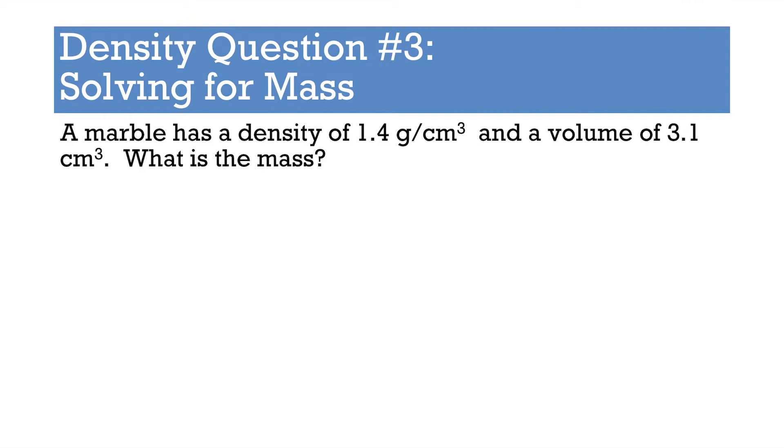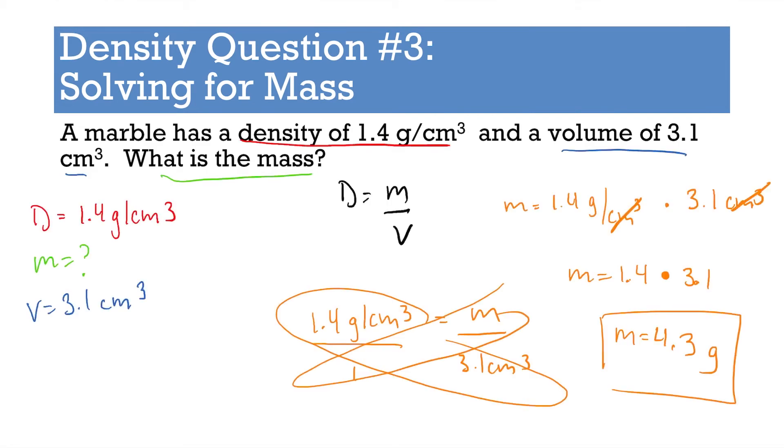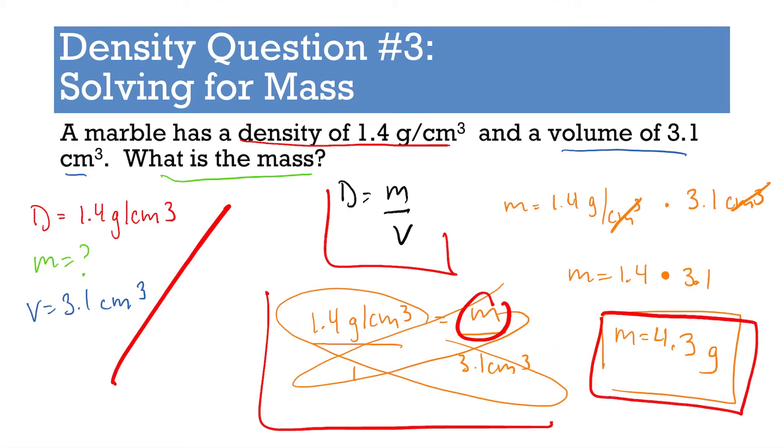If you have no idea what I'm talking about with the triangle, totally ignore it. Okay, number three. A marble has a density of 1.4 g/cm³ and a volume of 3.1 cm³. What is the mass? If we plug in everything, list out our numbers, plug everything into our formula. Again, we're cross multiplying for m, and we get 1.4 times 3.1. The centimeters cubed cancels out and we're left with 4.3 grams. Again, if you do the density triangle, you can see mass and volume. If we're looking for mass, you cover that up, density times volume.